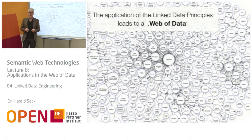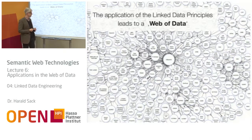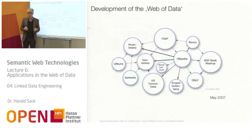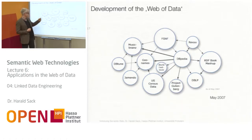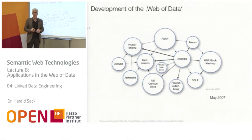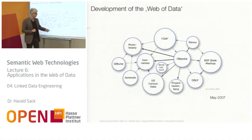These are the four linked data principles, and when you apply them, you will end up in a web of data. The application of the linked data principles leads to a web of data. Let's take a closer look at the linked open data cloud that we have already seen. The linked open data cloud developed starting in 2007 with a small number of datasets: DBpedia as a reference for Wikipedia at the center, Foaf (Friend of a Friend) as a large network among people, MusicBrainz, US census data, geographical information in GeoNames, the CIA World Factbook, literature from Project Gutenberg, and bibliography data from computer science in DBLP.